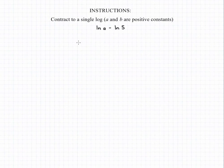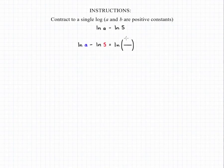In order to contract the natural log of a minus the natural log of 5 into a single log, we need to remember that any time we have two logs with the same base being subtracted, we can rewrite them as a single log in which we have a fraction where the numerator is the first term and the denominator is the term that was being subtracted from it. So we can rewrite the natural log of a minus the natural log of 5 as the natural log of a over 5, and that will be our final answer.